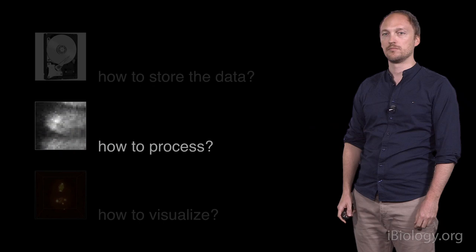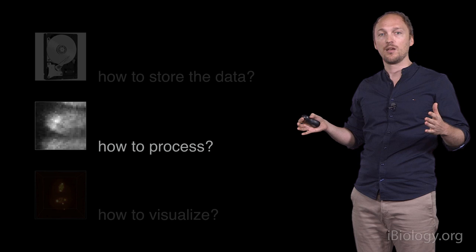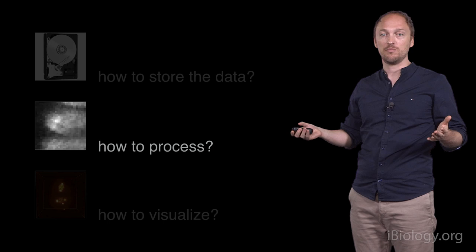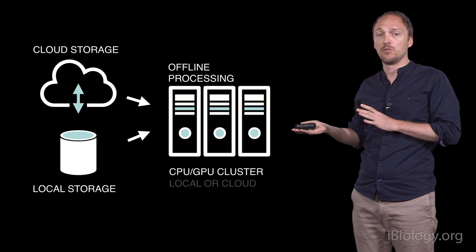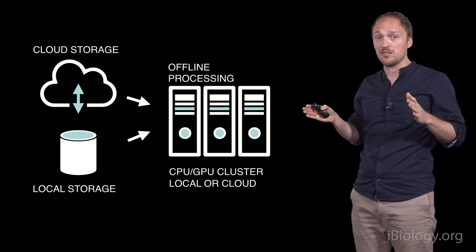So, we have seen how to store the data. Now, the question is how to process it. And what are the challenges and solutions around multidimensional image processing? So, once acquired and stored, the data typically needs to be processed. This can be done on a single machine or on a cluster of machines. These machines can be local or in the cloud. Transmission speed and ease of access of the data are key considerations.